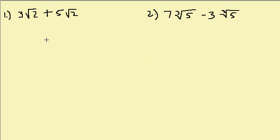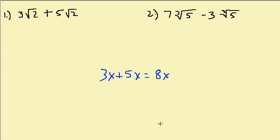So here we have three square roots of two plus five square roots of two. This is similar to combining like terms. In other words, if we have 3x plus 5x and we combine those, our answer is 8x.